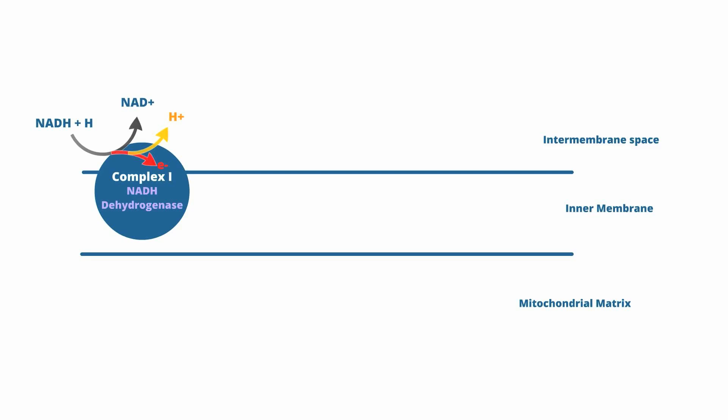NADH with H+ enters the ETC via the NADH dehydrogenase complex, otherwise known as complex 1. As the name suggests, NADH dehydrogenase removes the electrons with the hydrogen atom from NADH. NADH dehydrogenase contains a flavin mononucleotide molecule that allows for the acceptance of electrons and a hydrogen from NADH. It shuttles the hydrogen ion into the mitochondrial intermembrane space and then passes the electrons down the ETC. NADH dehydrogenase also contains an iron-sulfur complex that allows transfer of electrons to coenzyme Q, which is an intermediary complex between complex 1 and complex 3.